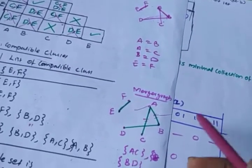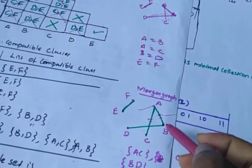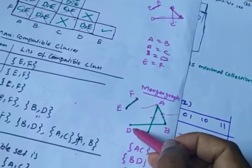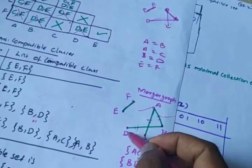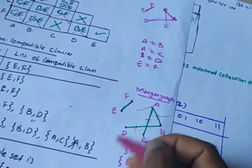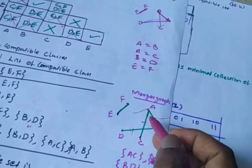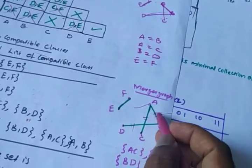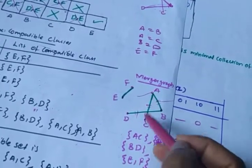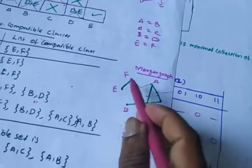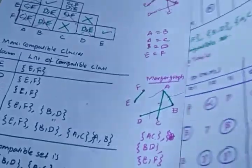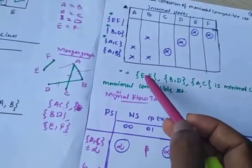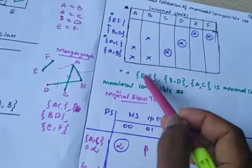Considering this, if you eliminate the A-B line, A is associated with C and B is associated with D — no problem. So eliminate that line. The remaining sets are: {A,C}, {B,D}, and {E,F}. The same result is obtained from the merger graph as from the tabular method. So from the merger graph: {A,C}, {B,D}, {E,F}.